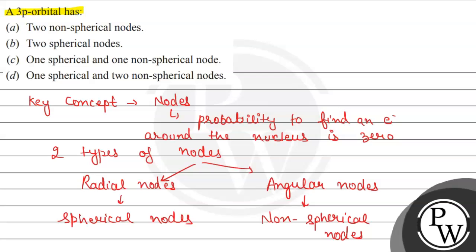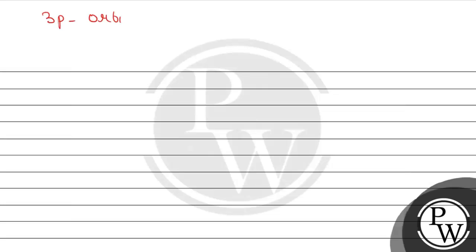So this was all about radial nodes and angular nodes, or we can say spherical nodes and non-spherical nodes. According to the given question, for the 3p orbital, the total number of nodes is equal to n minus 1.